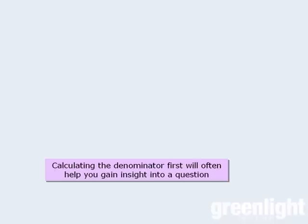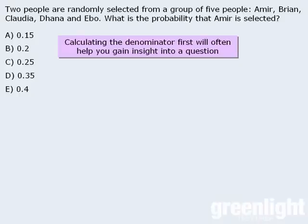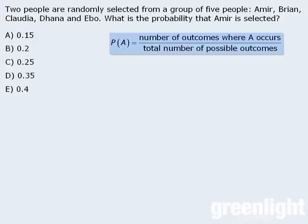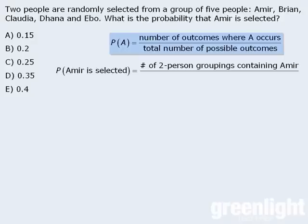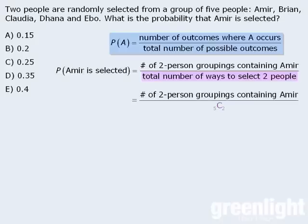Now let's examine a question that illustrates the utility of the strategy of evaluating the denominator first. Here, we are randomly selecting two people from five people, and we want to determine the probability that Amir is selected. The probability that Amir is selected equals the total number of outcomes where Amir is one of the selected people divided by the total number of ways to select two people from five. Since the order of the two selected people does not matter, this is a combination question. We can select two people from five people in five choose two ways.